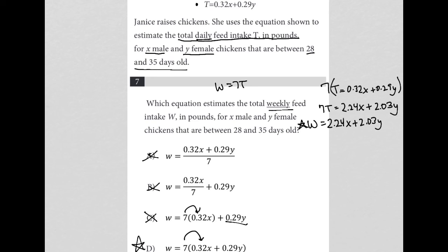Again, because when we distribute the 7 across, we end up with this exact equation that we have here. So the answer here is choice D.